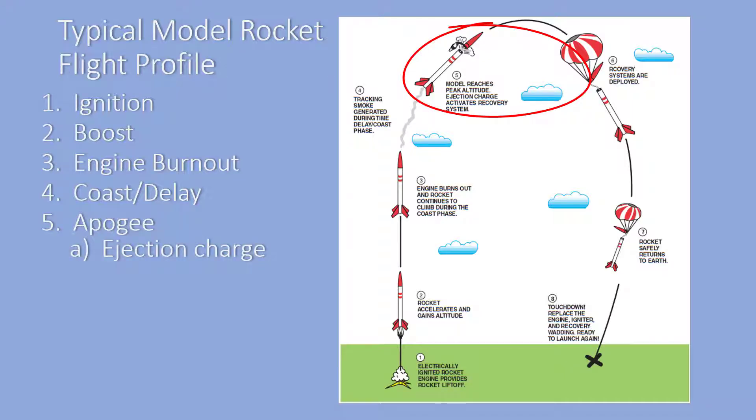We don't want the ejection charge to fire too early because the rocket will be moving fast and the recovery system could be damaged. An early ejection will also limit the altitude a rocket can reach. We also don't want the ejection charge to occur too much after apogee. The rocket will be accelerating downward after apogee. If the ejection charge is delayed too long, the rocket will again be moving fast and it could damage the recovery system.